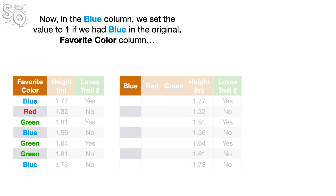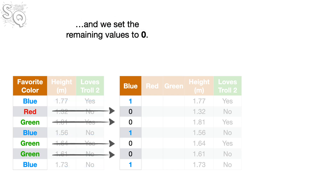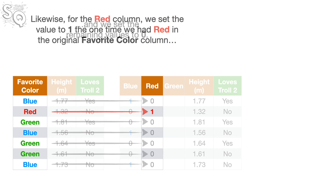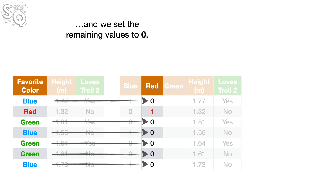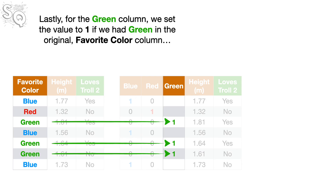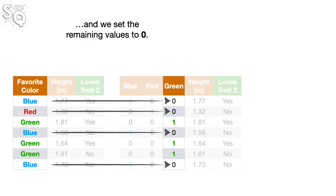Now, in the blue column, we set the value to 1 if we had blue in the original Favorite Color column, and we set the remaining values to 0. Likewise, for the red column, we set the value to 1 the one time we had red in the original Favorite Color column, and we set the remaining values to 0. Lastly, for the green column, we set the value to 1 if we had green in the original Favorite Color column, and we set the remaining values to 0.